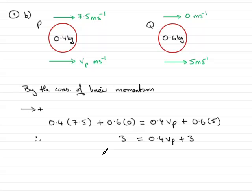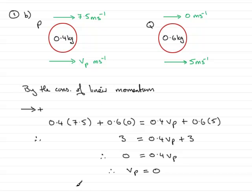Working this out: 0.4 times 7.5 is 3, and 0.6 times 0 is 0, so the left-hand side is 3. On the right, 0.6 times 5 is 3, so we have 3 = 0.4Vp + 3. Subtracting 3 from both sides gives 0 = 0.4Vp, and dividing both sides by 0.4 gives Vp = 0. Therefore, P is brought to rest after the collision — which is what we had to show. And that brings us to the end of number one.